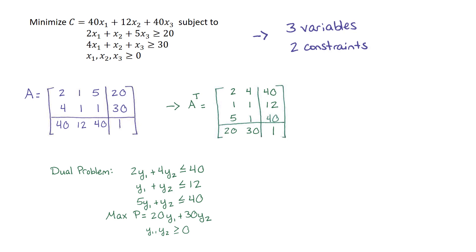Now we form the dual problem using different letters—switching to y's. Row 1 gives us 2y₁ plus 4y₂ less than or equal to 40. When we change to the dual, we change the inequality sign. Row 2 gives y₁ plus y₂ less than or equal to 12. Row 3 gives 5y₁ plus y₂ less than or equal to 40. The new objective function from the last row is: maximize P equals 20y₁ plus 30y₂, with y₁ and y₂ non-negative. In the dual problem we now have two variables and three constraints, compared to three variables and two constraints in the original.